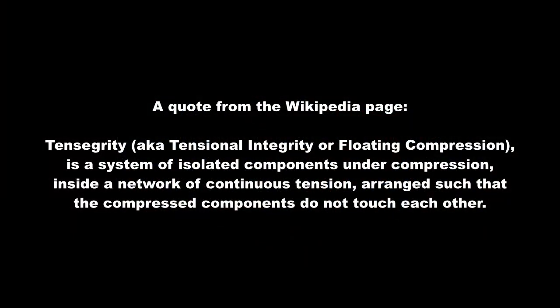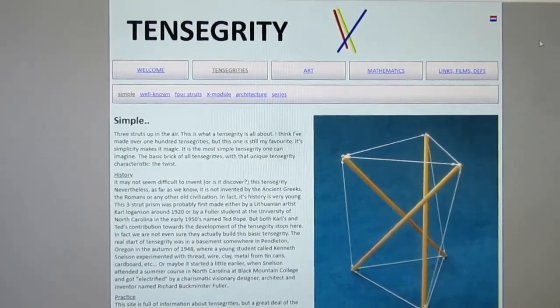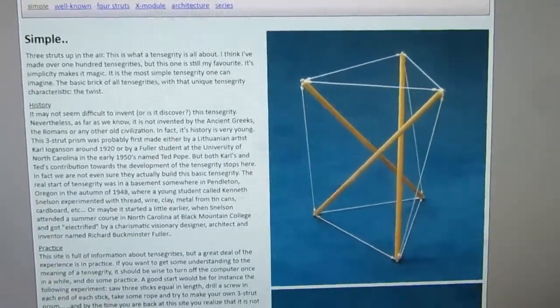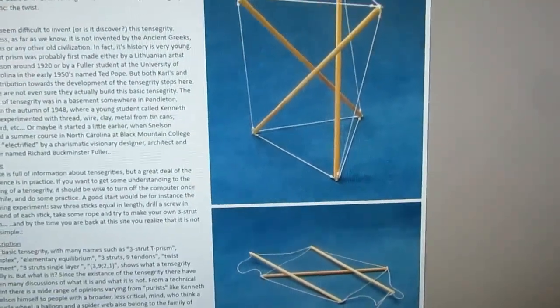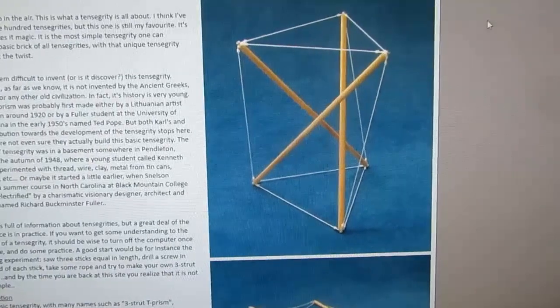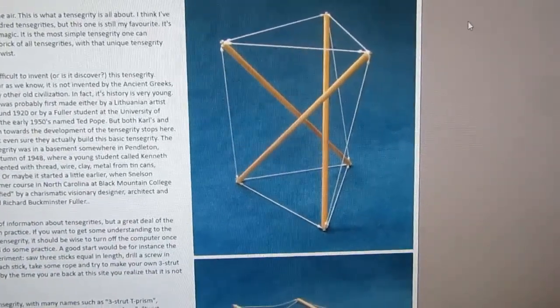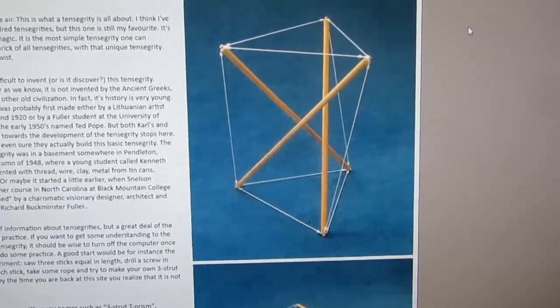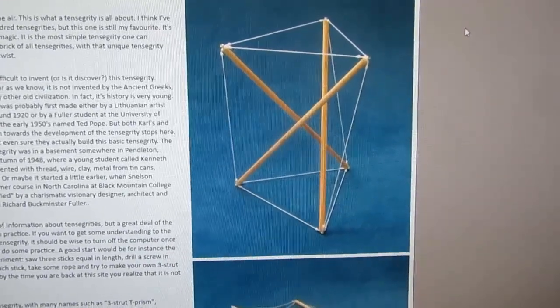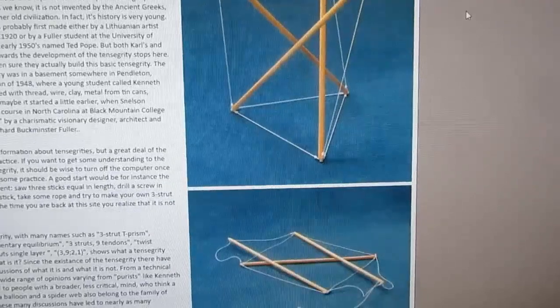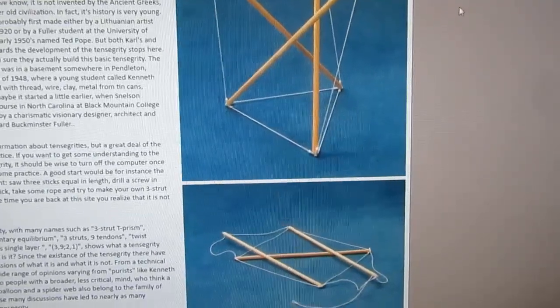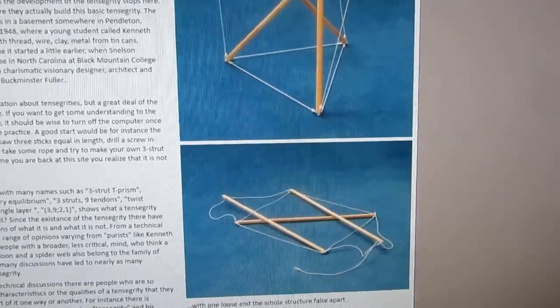Here's just a random website on tensegrity, and it shows some different examples of simple tensegrity structures. A few rods which are in compression, and then light pieces of string connecting them, and those are always under tension. It's the balance of the tensions and the compressions in the two different kinds of structure that give the entire structure its structural integrity, or the tensegrity as Buckminster would have called it.